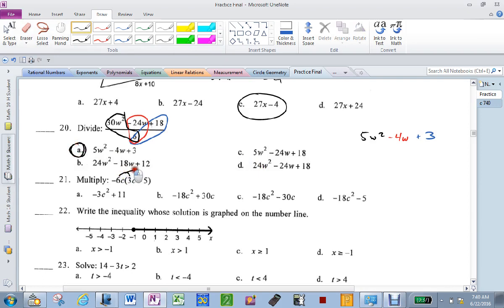Multiply. Distribute. Don't forget the exponents. Negative 18c² plus 30c. b.